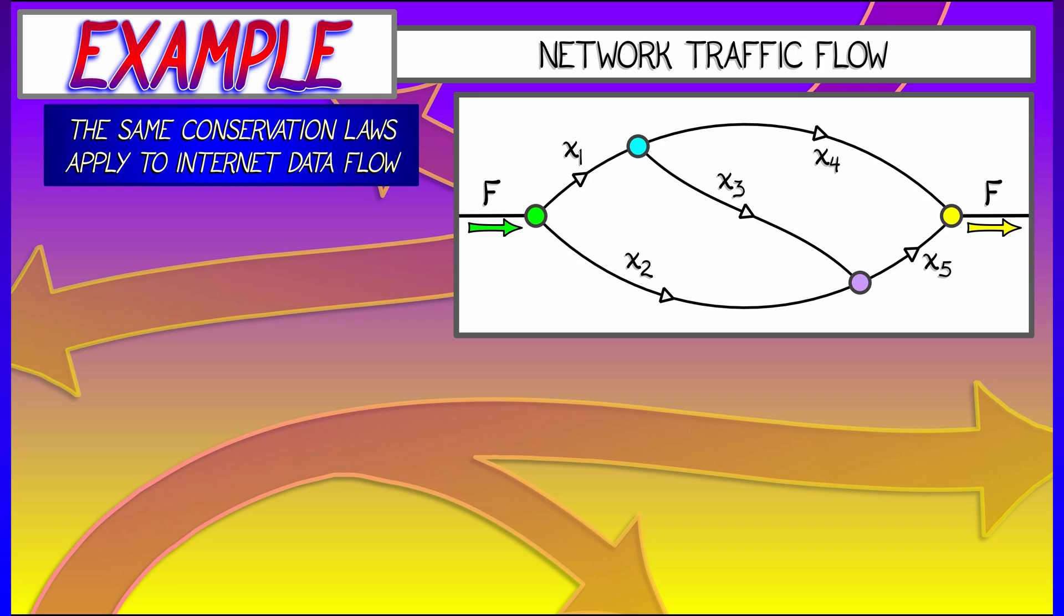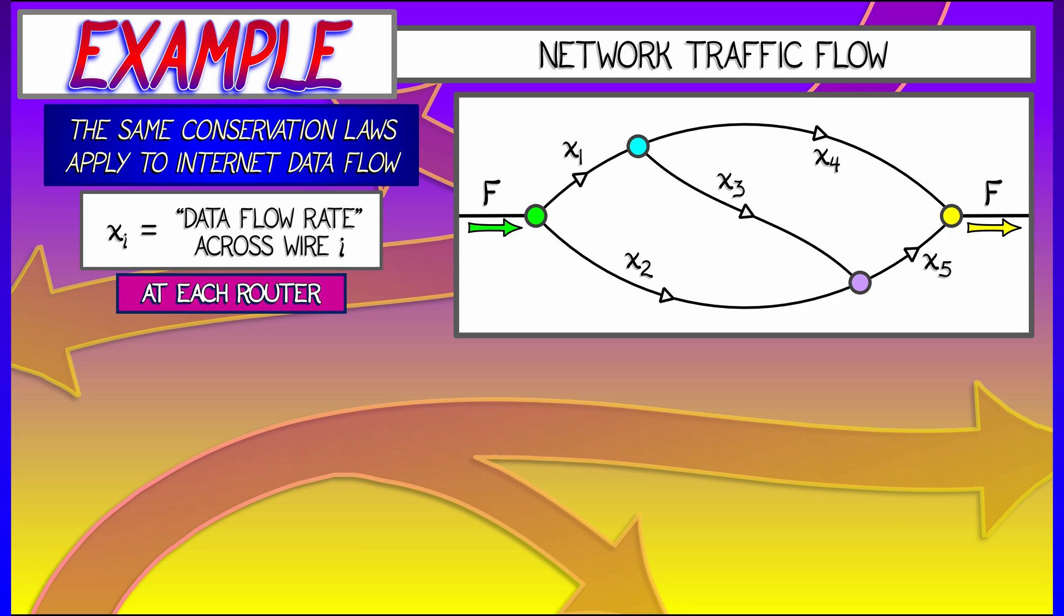There are a bunch of nodes or routers at which data can get split apart. On each edge, on each wire, you have some flow rate. Let's call that XI. In this case, we have X1, X2, X3, X4, X5.